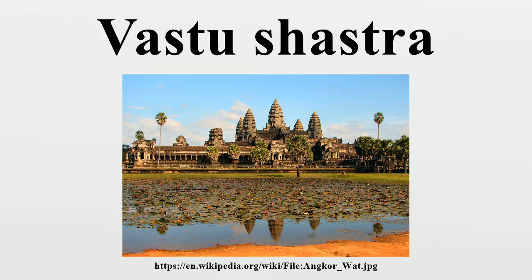A site of any shape can be divided using the Pada Vinyasa. Sites are known by the number of squares, ranging from 1×1 to 32×32 square sites. Examples of mandalas with corresponding names of sites include: Sakala corresponds to Ekapada, Pekaka to Dwipada, Pitha to Tripada, Mahara Pitha to Chatushpada, Upapitha to Panchapada, Ugrapitha to Shastapada, Sthandila to Saptapada, Manduka Chandita to Ashtapada, Paramasayika to Navapada, and Asana to Dasapada.